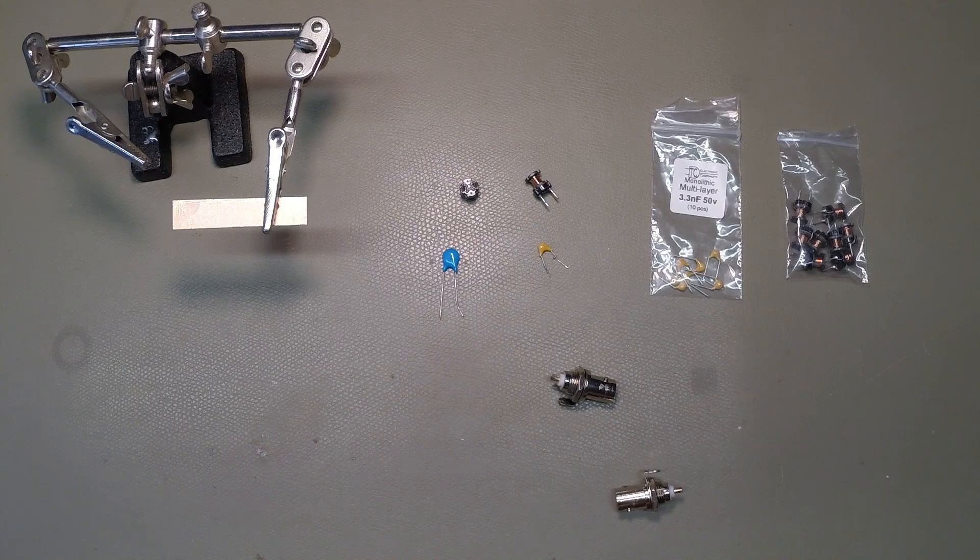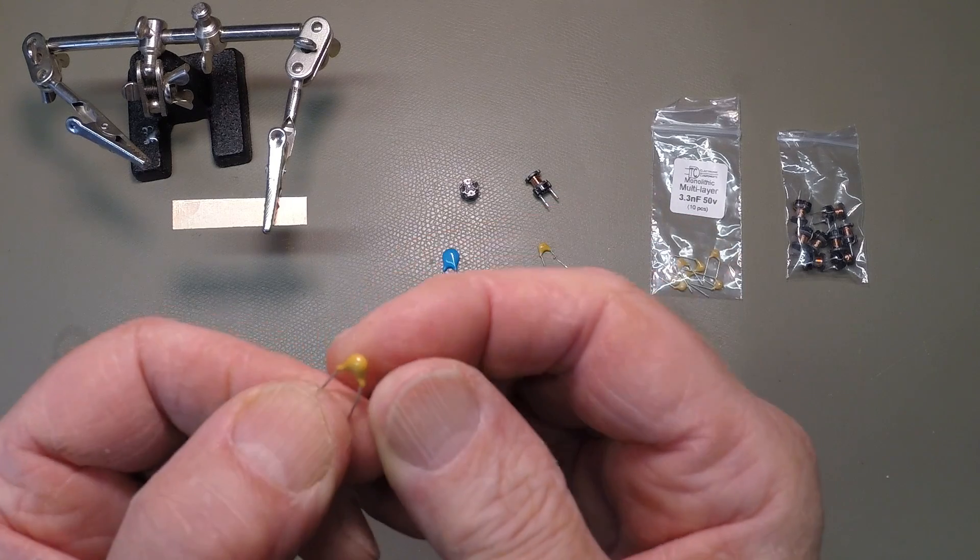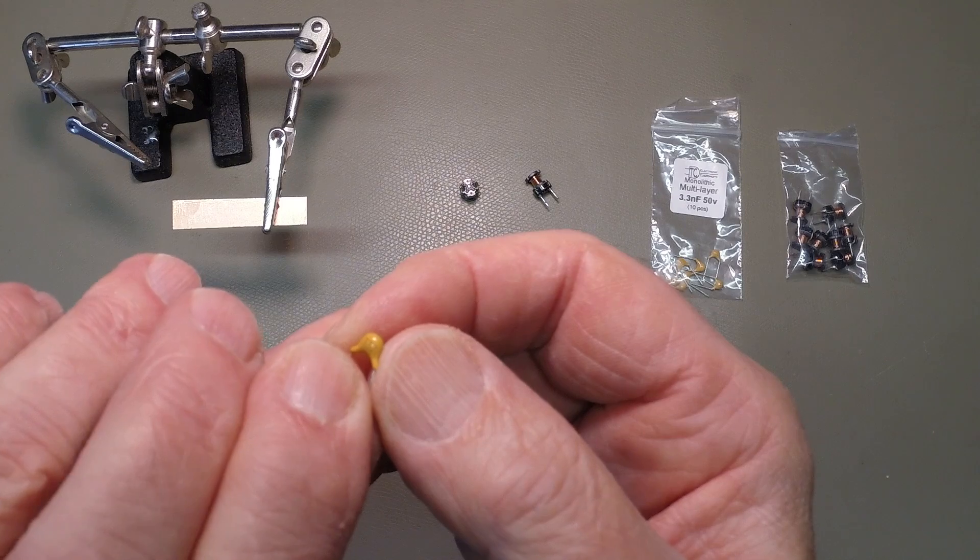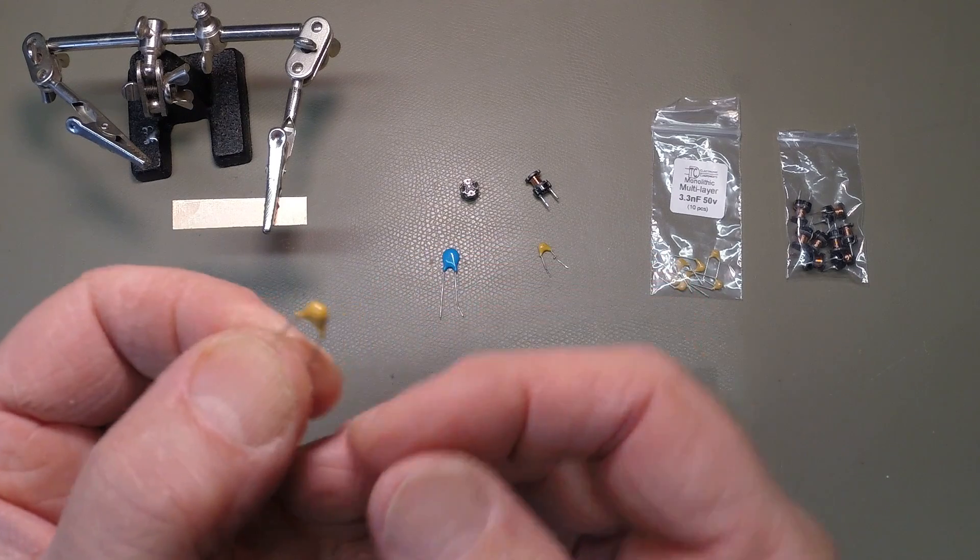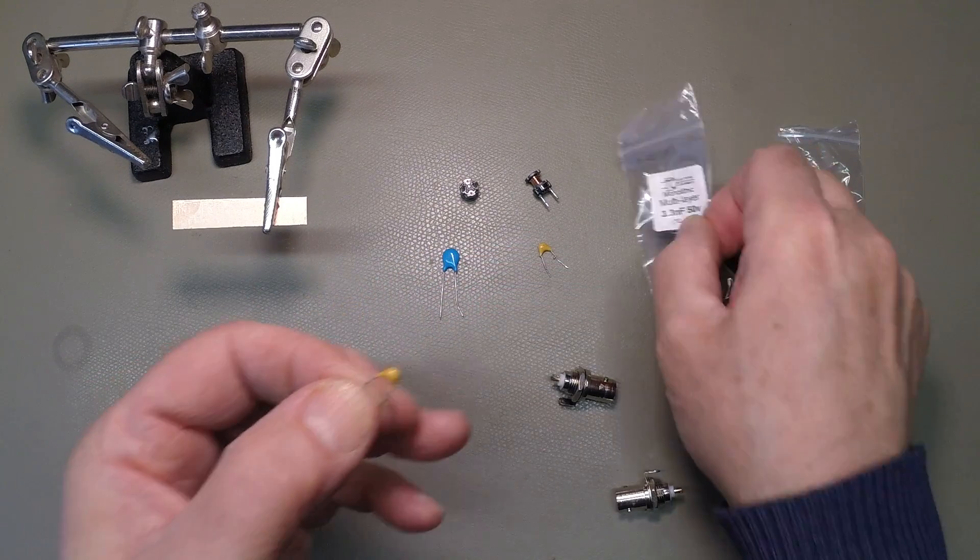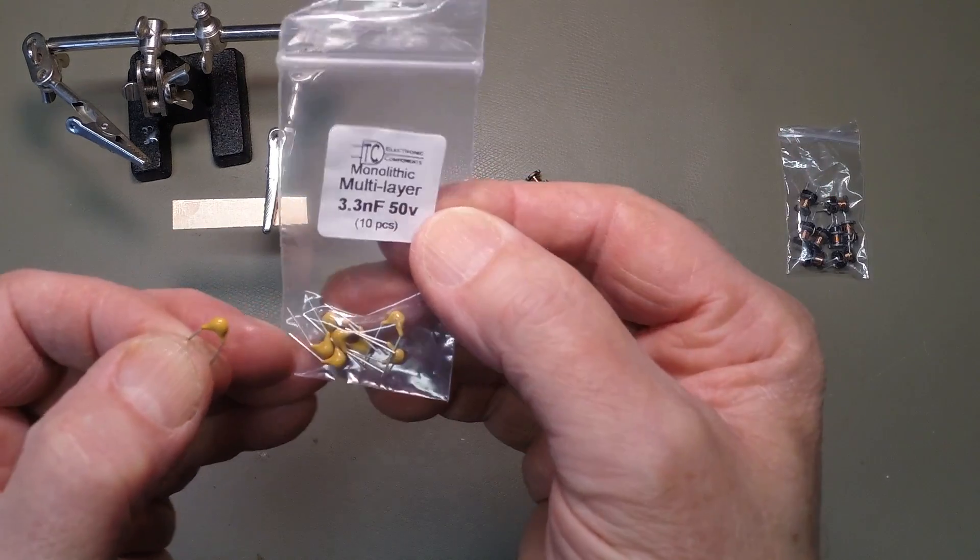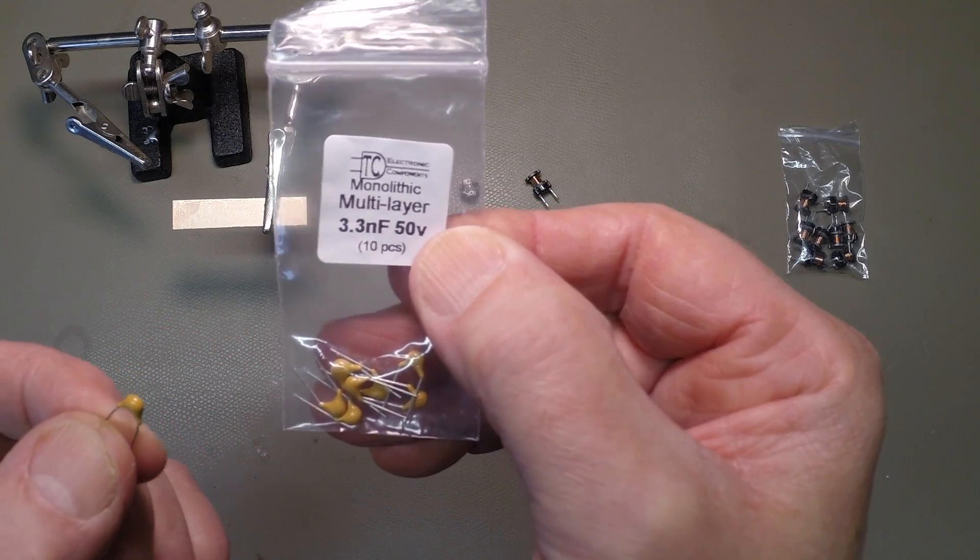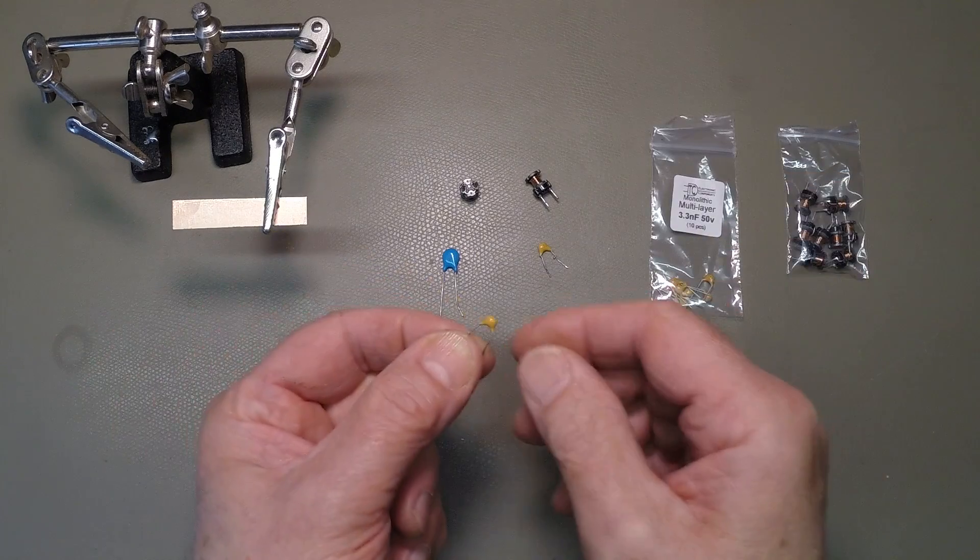The capacitors are even cheaper. Difficult to work out how they're marked. This one's marked 332. I think a bag of 10 of these off a supplier on eBay cost me about £1.50. So these are around 15 pence each.